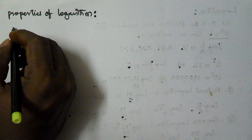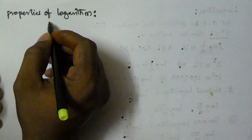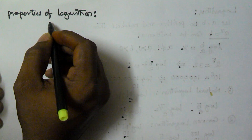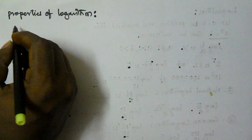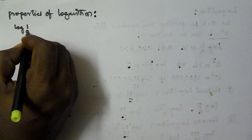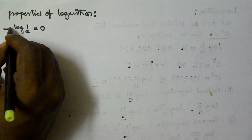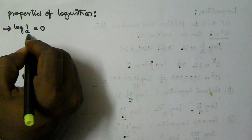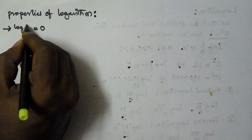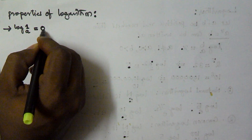Hello friends, in this video we will see the properties of logarithm. The first property is log 1 base a is equivalent to 0. This is the first property — irrespective of any base, the log 1 value is always going to be 0.